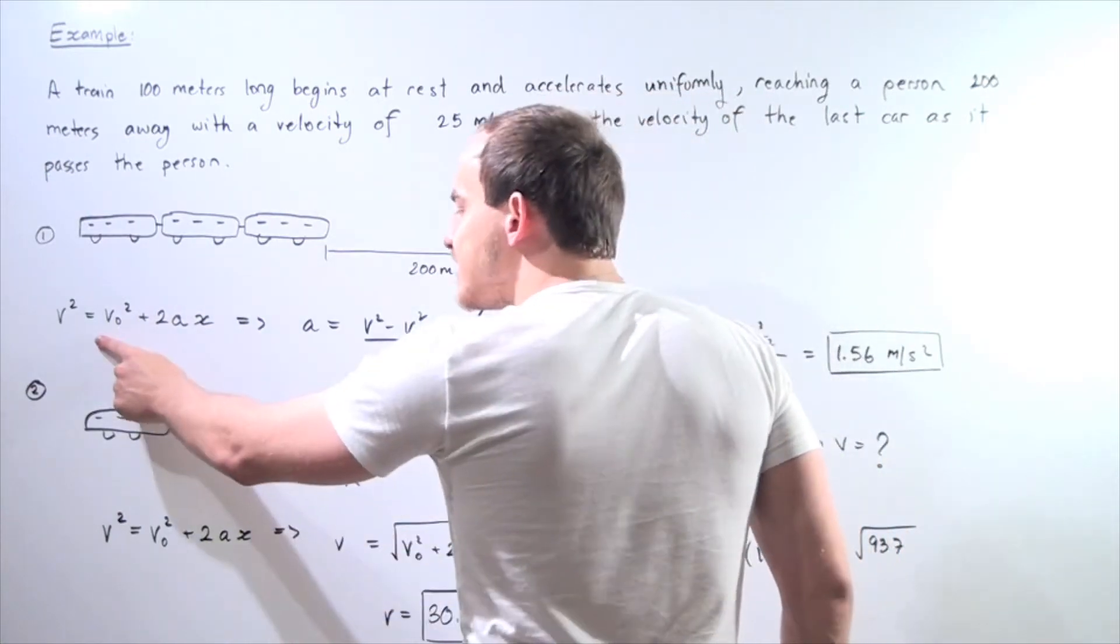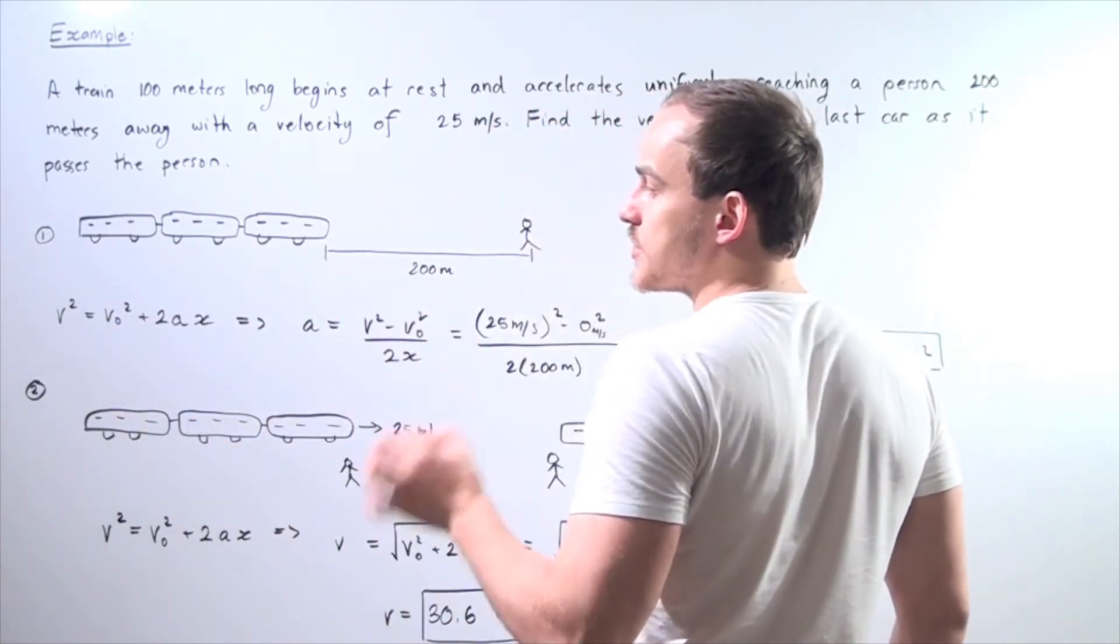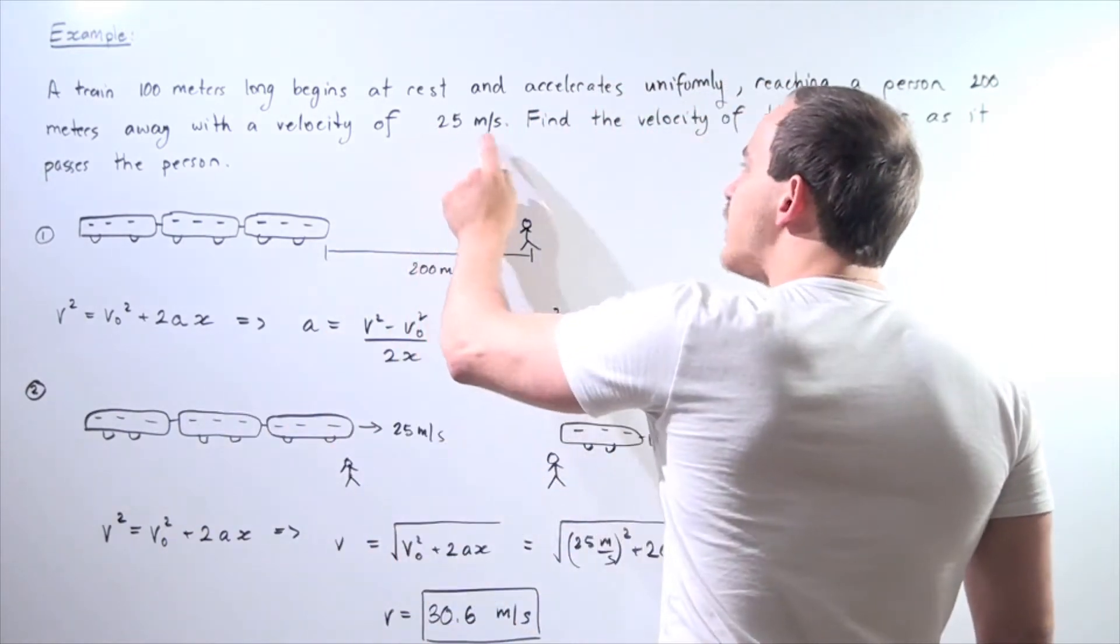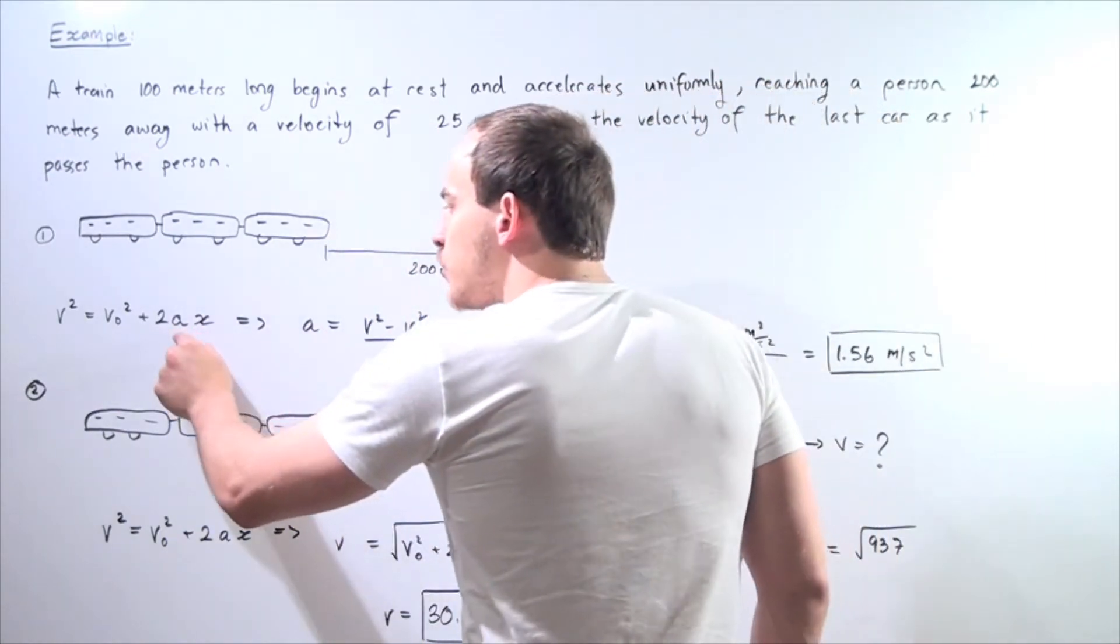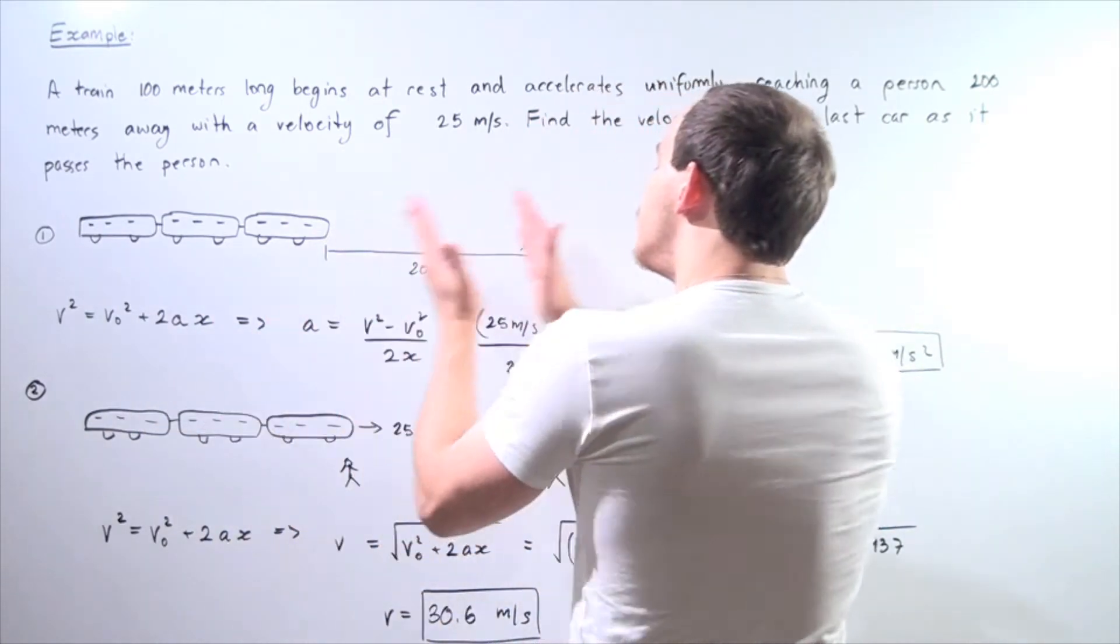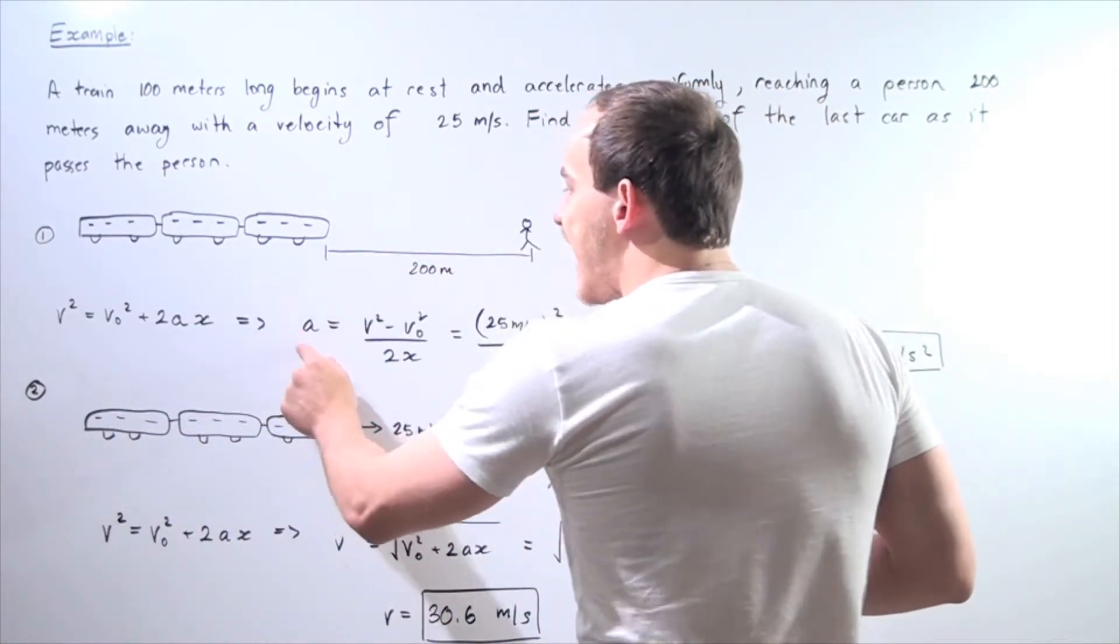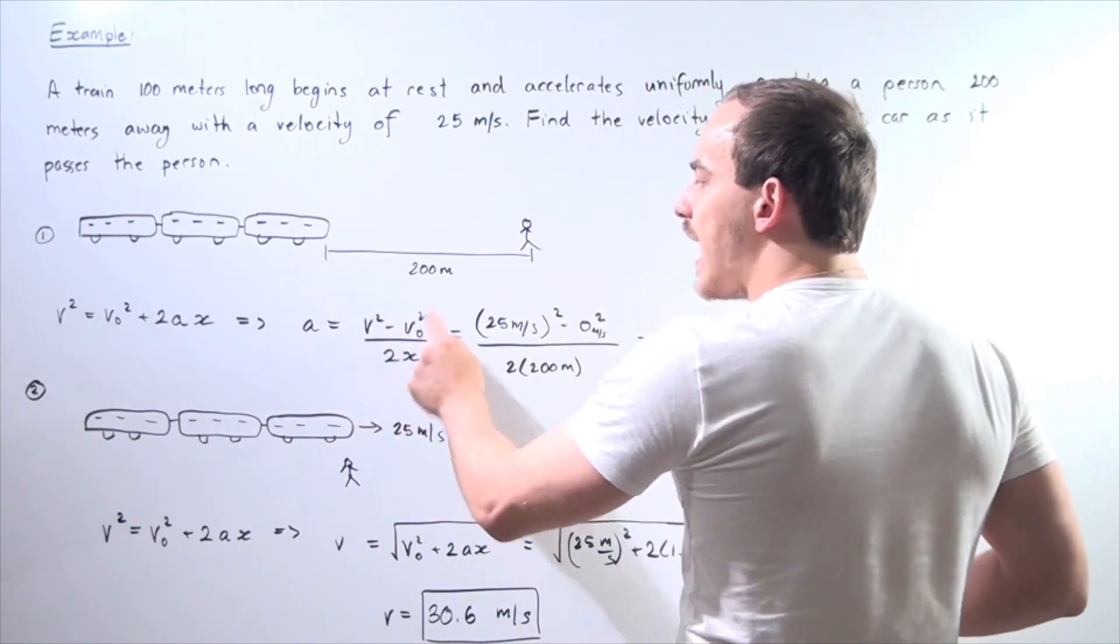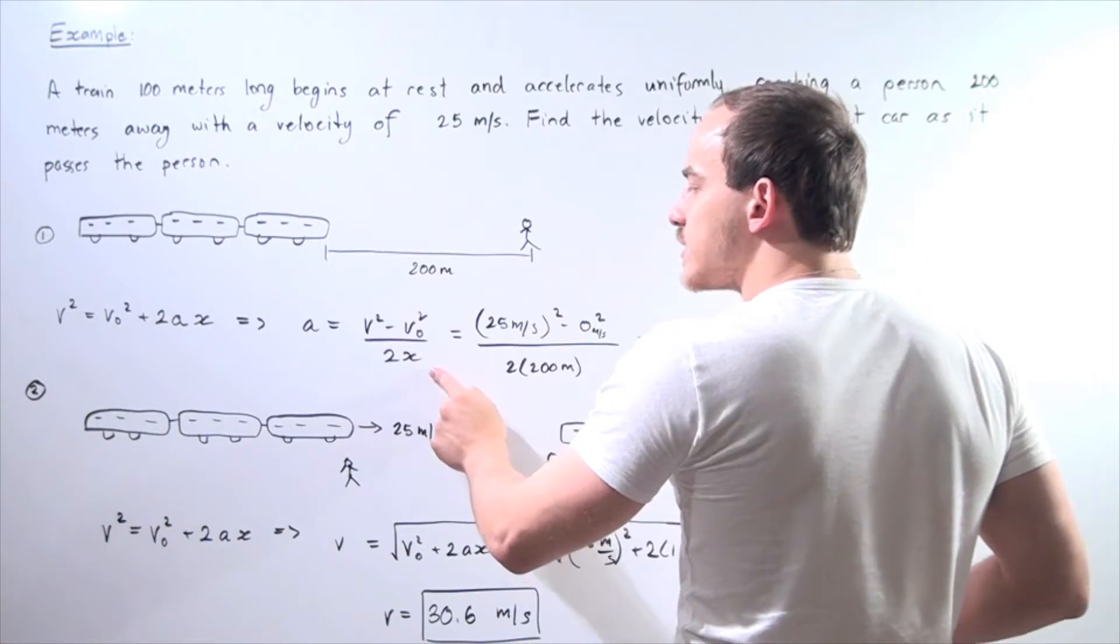We know what our initial velocity is. It's 0 meters per second. And we know what our final velocity is. It's 25 meters per second. So let's rearrange and place a on one side and everything else on the other side. We get a equals v squared minus v naught squared divided by 2x.